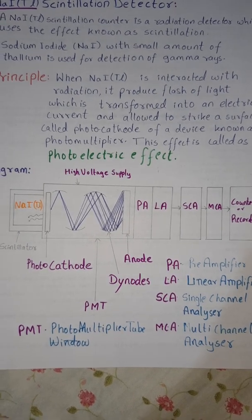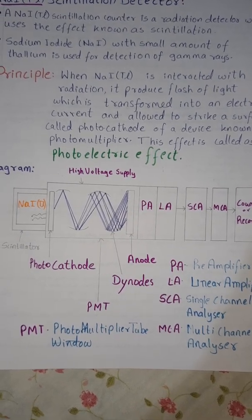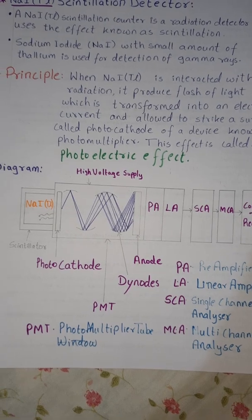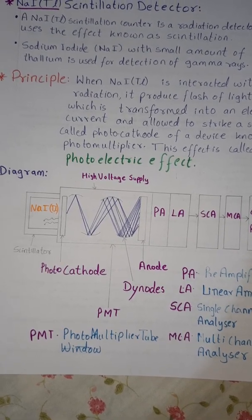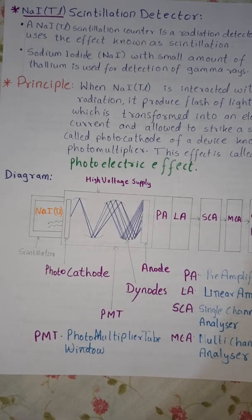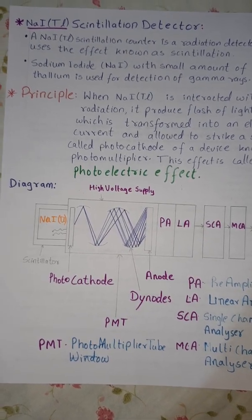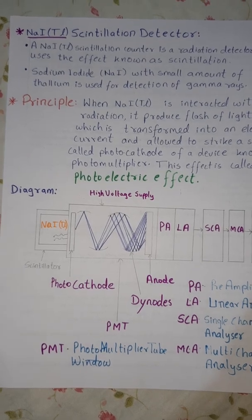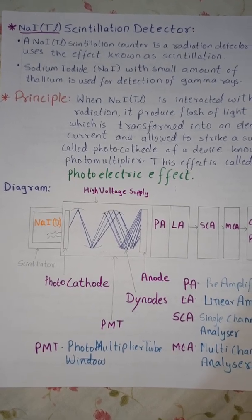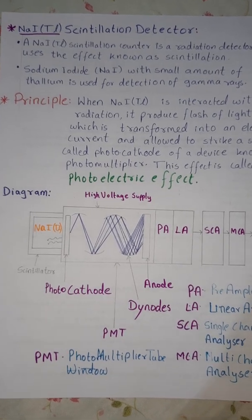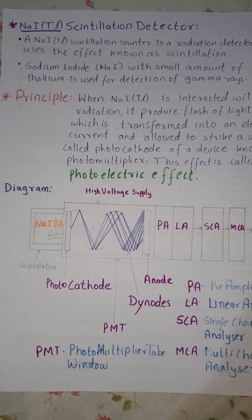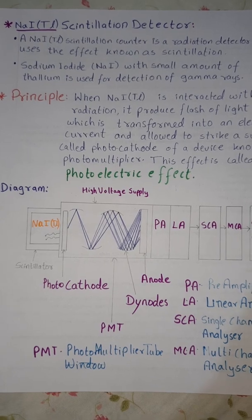There is a principle of photoelectric effect involved. When the electron absorbs energy, it goes to the higher energy level and then falls back to the lower energy level after some time. This travel time which the electron takes, there is emittance of light which is in the form of radiation. This is what is captured and this gets multiplied with the help of the dinode.